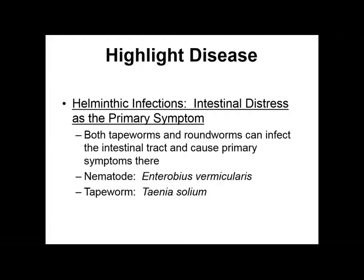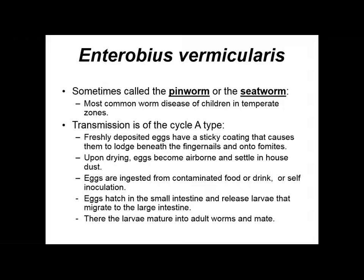One highlight disease is helminthic infection causing intestinal distress as the primary symptom — this can be from a tapeworm or a roundworm. The nematode Enterobius vermicularis, or the tapeworm Taenia solium, are two helminths that can do this. Let's discuss these two specific species in detail. Enterobius vermicularis is sometimes referred to as a pinworm or seatworm — pinworm is the most common term used in the Midwest.